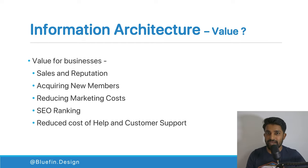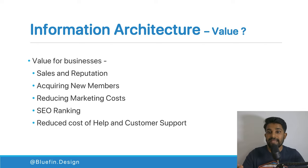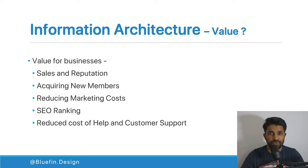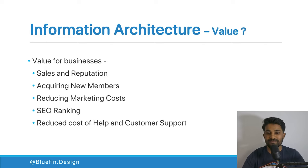The third business value of IA is reducing marketing costs. Marketing campaign costs and customer acquisition costs are increasing due to competition, so it's important to convert potential users into customers in the least amount of time and money spent. IA helps organize content and market your product effectively. This also relates to SEO ranking — if search engines like Google can't find content on your website correctly, your results may not appear at the top. Can you remember the last time you went to page two of Google results?